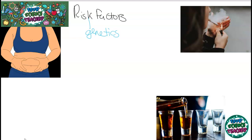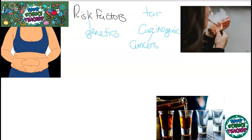That is because cigarettes contain a substance called tar, and tar is a carcinogenic substance. This means it can increase the chance of your cells mutating. That's why lots of smokers end up getting cancers, which can vary from mouth cancer to lung cancer, or even throat cancer because smoke passes through the throat as well.